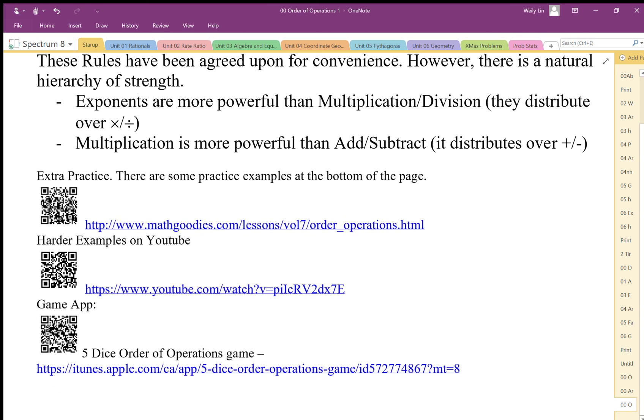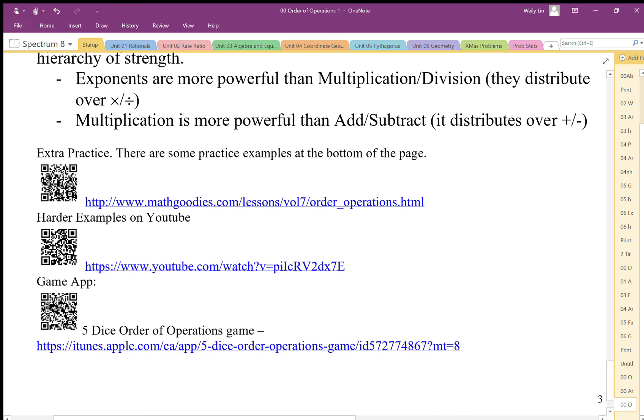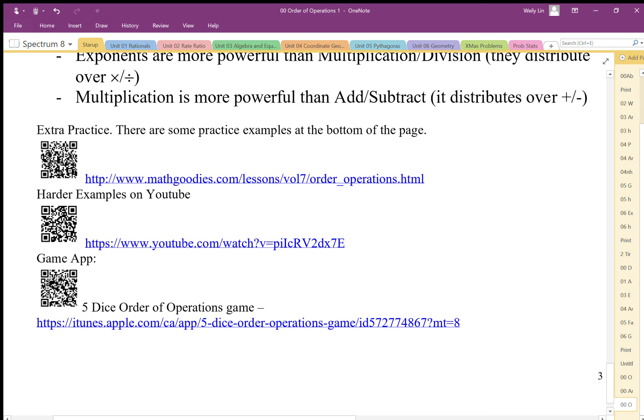There's some extra practice here with harder examples if you want to see them. There's a five dice order of operations game where you can roll five dice and use order of operations to get certain numbers. There's an app for this you can play directly, and another one for the next set of notes where you'll roll your own dice. I've attached an app so you can do it digitally.